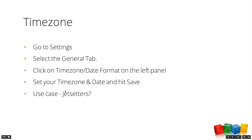If you're traveling frequently and don't have a fixed home location, we don't quite have an auto-detect feature yet to reset time zones based on where you are — that might be coming in the future. For now, you can manually set the time zone each time you go to a different location, which will keep your calendar moving correctly with you.